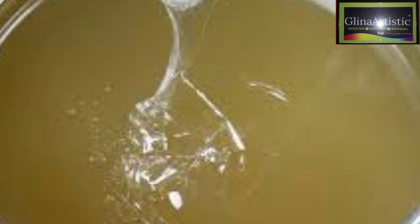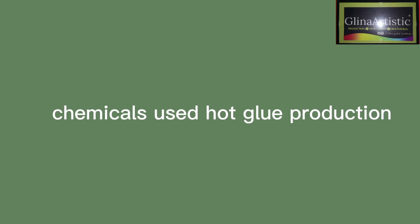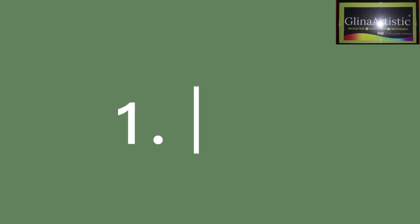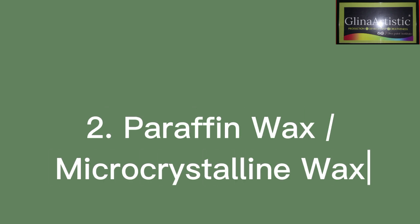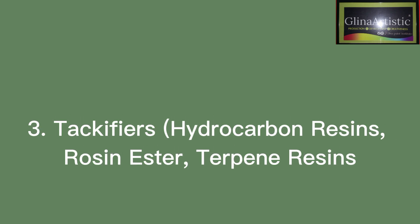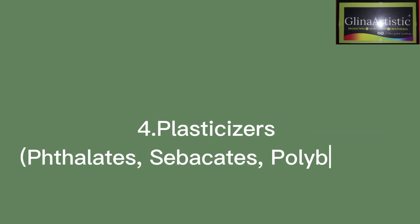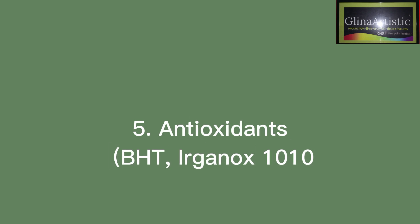Now that you understand adhesives, it is time to get on. For today's tutorial I'll be showing you how to produce your own hot glue — the same adhesive used in glue guns for packaging and crafts. The chemicals used for hot glue production are: number one, EVA (ethylene-vinyl acetate copolymer); we have paraffin wax, which includes microcrystalline wax; we have the tackifier resin — rosin ester and hydrocarbon resin; and we have the plasticizers, which are the PPG.